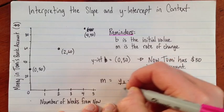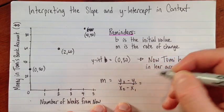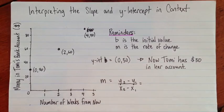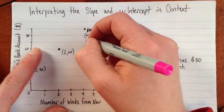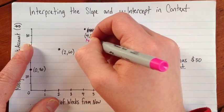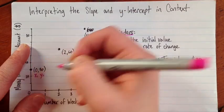y2 minus y1 over x2 minus x1. And then I'll choose two points. Maybe I'll choose the two extreme points. So I'll call this x2, y2, and x1, y1.